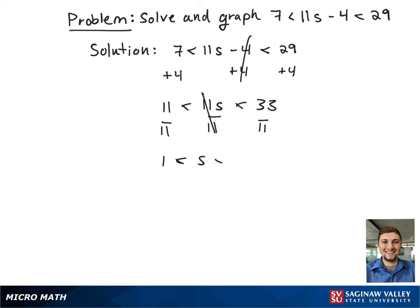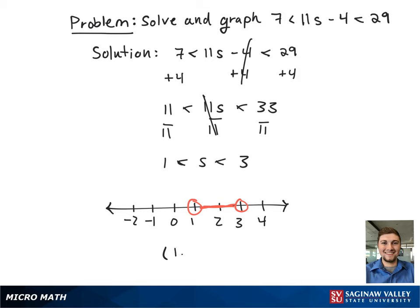This results in 1 is less than s is less than 3. On the number line, this looks like an open bracket from 1 to 3 going in between them since s is in between 1 and 3.